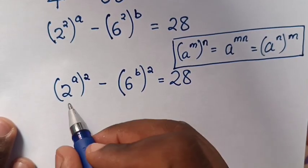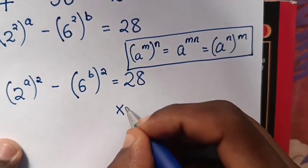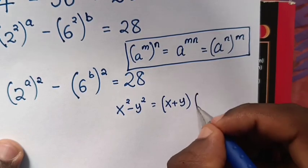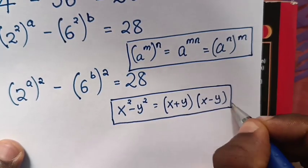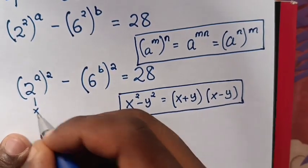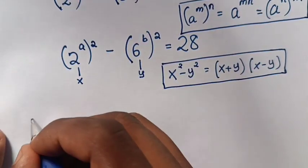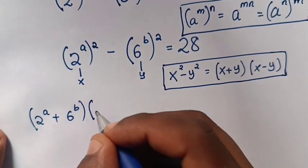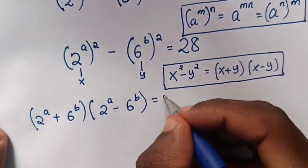Now we can see outside the brackets is power 2 and here is power 2. So we apply the rule that x power 2 minus y power 2 is equals to x plus y bracket times x minus y bracket. In our equation it will be 2 power a plus 6 power b, bracket times 2 power a minus 6 power b, bracket is equals to 28.